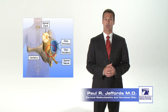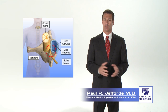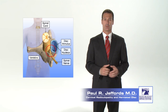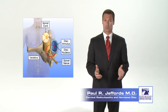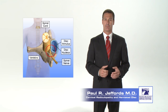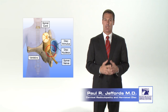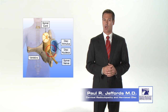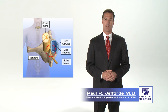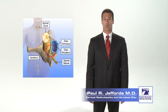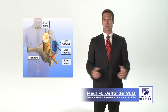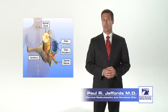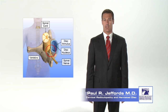To understand disc herniations, we need to take a closer look at the structure of the disc. Each spinal disc consists of two parts: an outer wall called the annulus, which is like a tough ligament made of fibers woven together, and an inner nucleus which is like a firm gel. Most disc herniations are not caused by a sudden injury but by gradual disc degeneration due to the normal aging process. This process happens in all of us, but in some people it may progress at a faster rate or start at an earlier age.